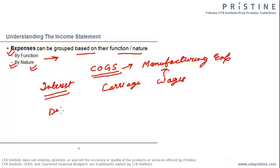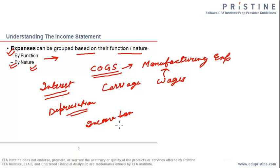Other expenses are classified by nature. For example, interest — we don't show it as interest for purchase of an asset or interest for the administration block; all interest expenses are clubbed under a single head called interest. Similarly, depreciation is shown as a single head, and income taxes are not presented separately for different divisions. So some expenses are by function and some by nature — a typical CFA question may ask you to classify them.